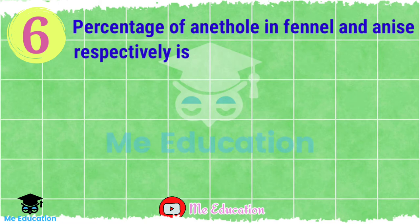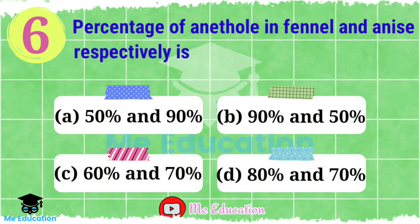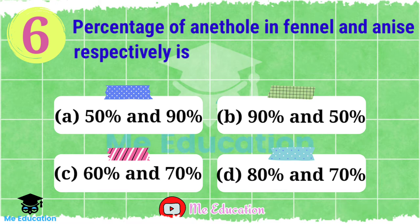Question number 6: The percentage of anethylaene, phenol, and anethyl respectively — Option A: 50 and 90 percent; Option B: 90 and 50 percent; Option C: 60 and 70 percent; Option D: 80 and 70 percent. Now pause the video. The right answer is Option A, 50 and 90 percent.